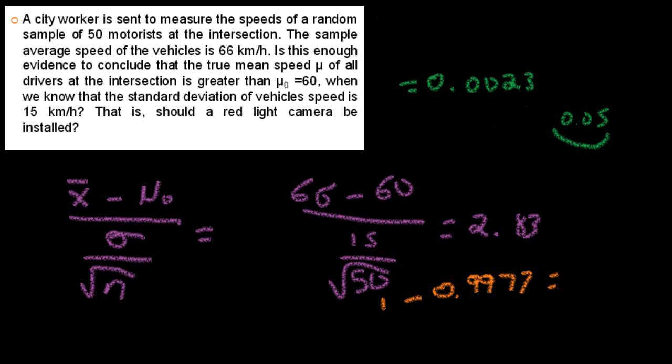Now we just have to match it qualitatively. Looking at these answers, we can say that the probability we got is significantly less than the level of significance we're testing it by. And because that is the case, we have enough evidence to suggest that the average motorists are going more than 60 kilometers an hour, and therefore a red light camera would need to be installed.